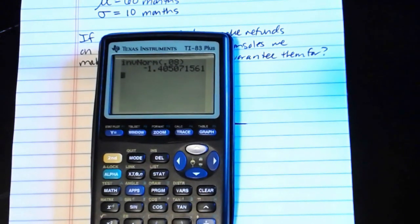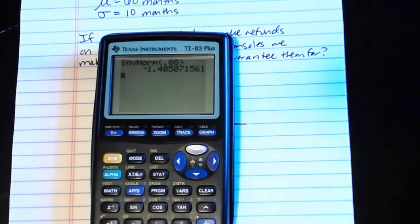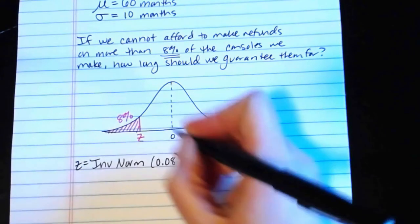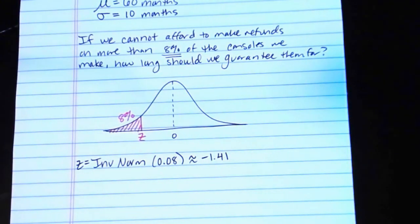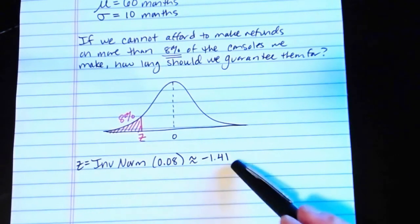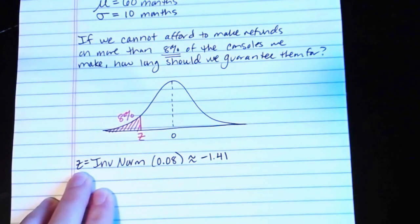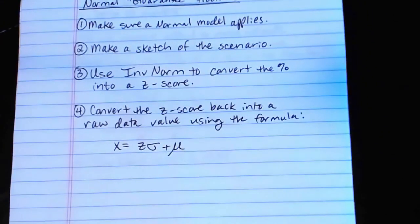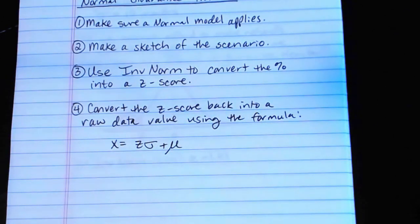Here we are, INV norm 0.08. Close out that parenthesis and press enter. If we follow the book's convention of keeping two decimal places here because this represents a z-score, when we round it, we're looking at negative 1.41. So z equals approximately negative 1.41. But clearly, that's not what we tell the board of directors. We don't tell them that we guarantee the console for negative 1.41 months. That doesn't make any sense. Remember that this value is a z-score, not a raw data value.